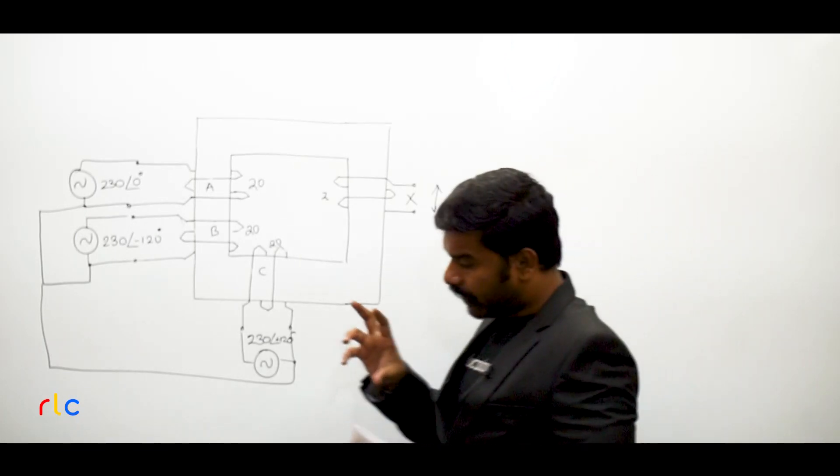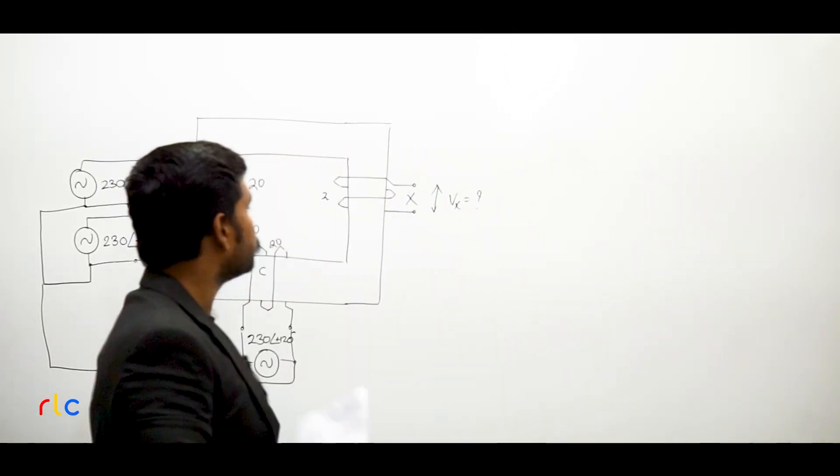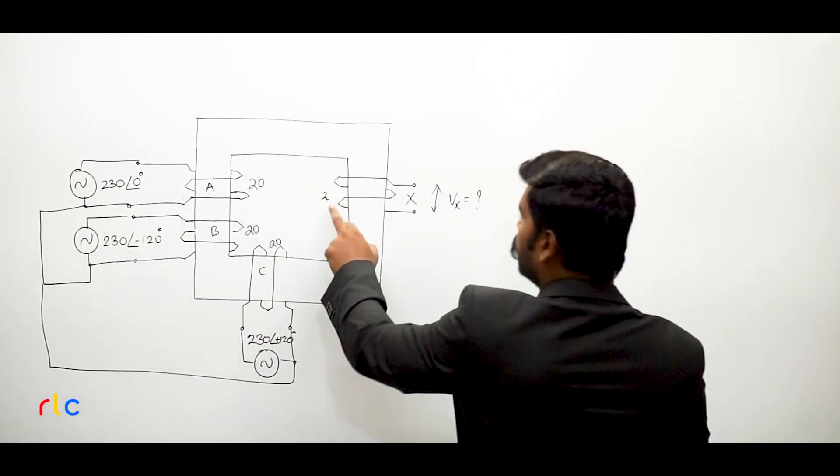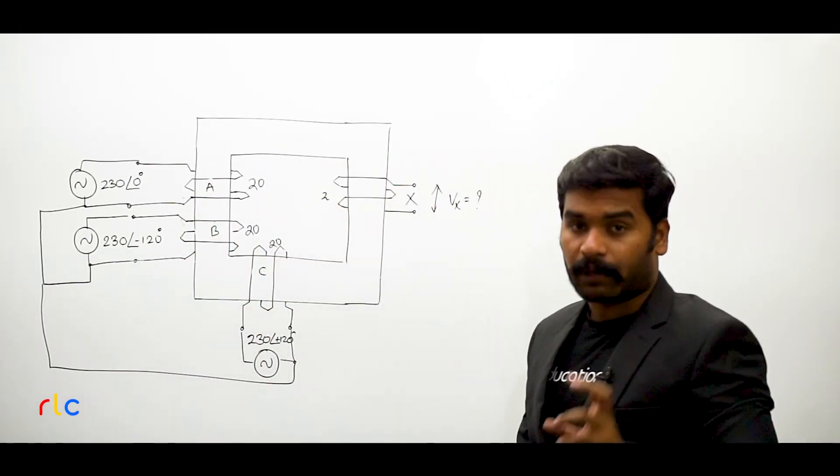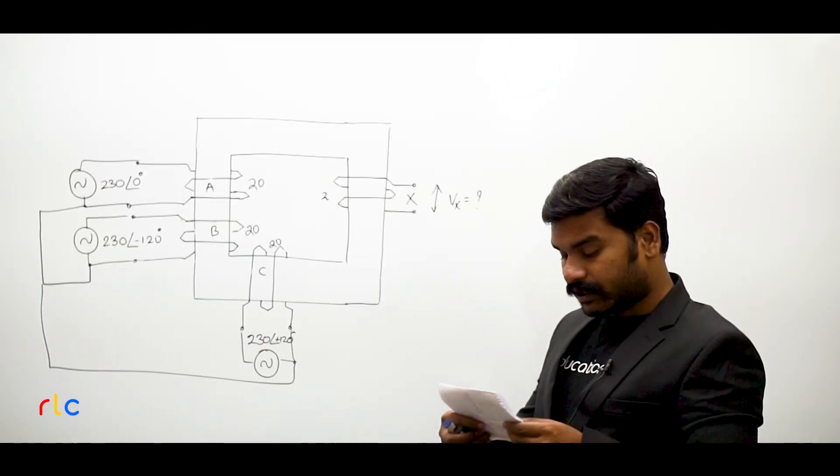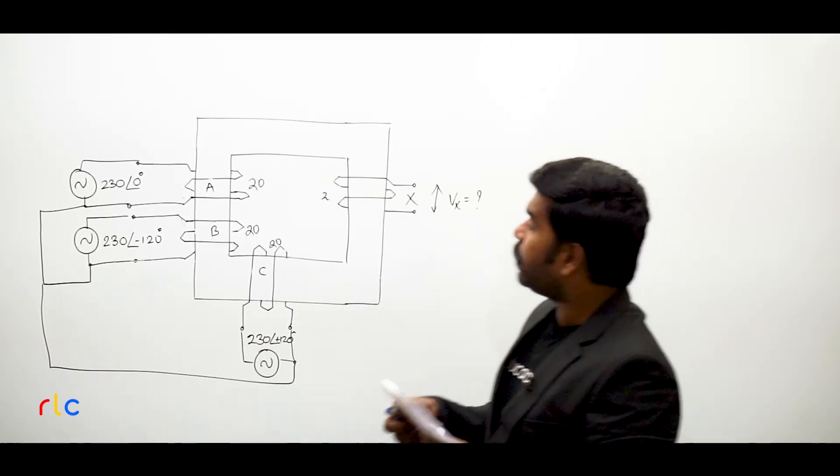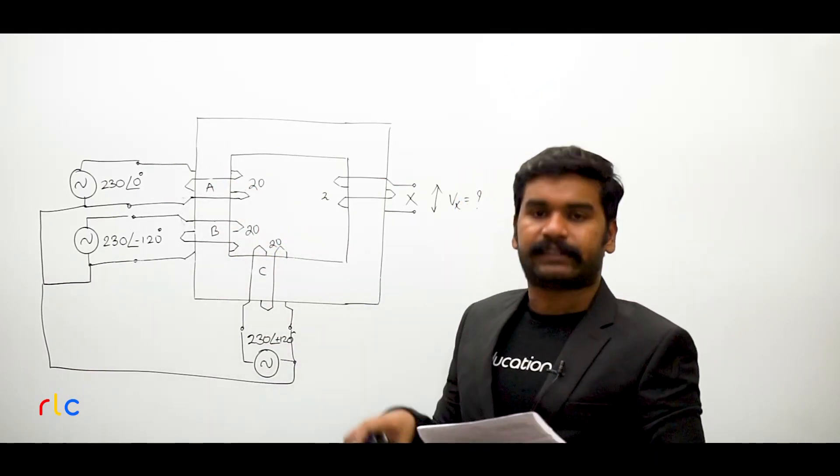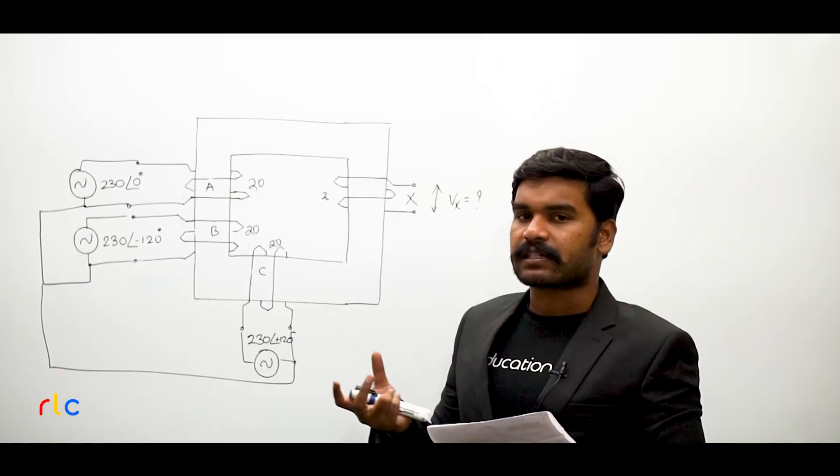Another thing importantly, there are 20 turns for A, B, C windings and 2 turns for X winding. Number of turns also given. Another important thing he will mention in the question: the sense of the winding should be considered. What do you mean by the sense of winding?